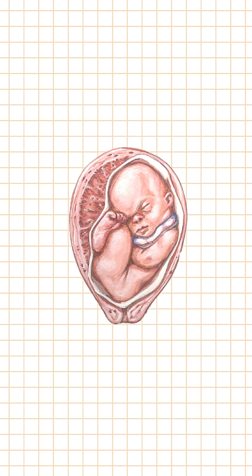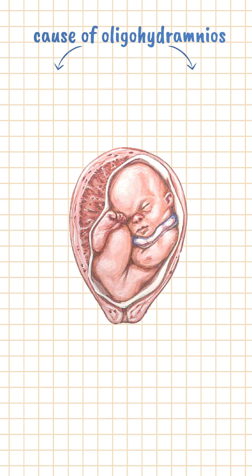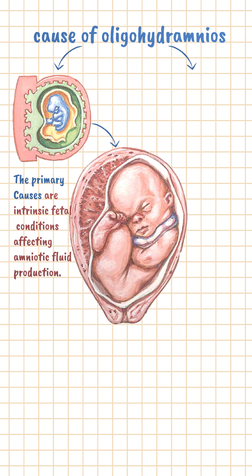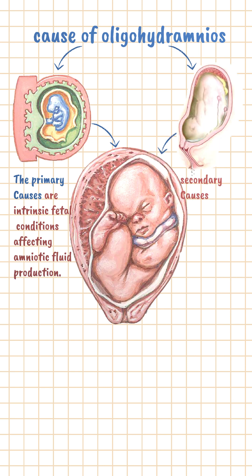What causes oligohydramnios? We can group the causes into two main categories. One: primary anomalies — these are intrinsic fetal conditions affecting amniotic fluid production. Two: secondary anomalies, which are external factors that lead to decreased fluid levels.